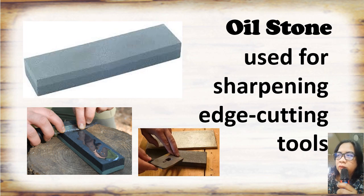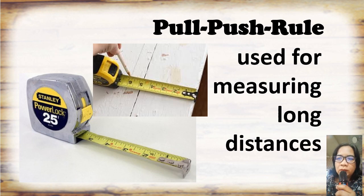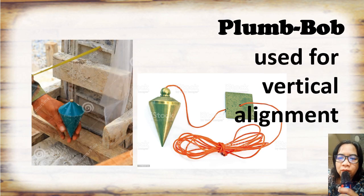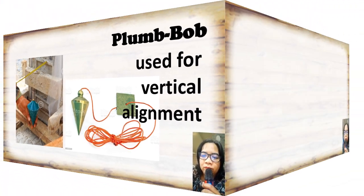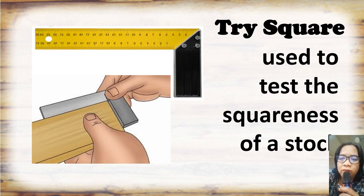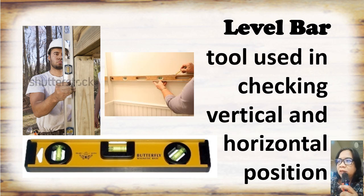Oil stone, used for sharpening edge cutting tools. Pull-push rule, used for measuring long distances. Plumb bob, used for vertical alignment. Tri-square, used to test the squareness of a stock. Level bar, a tool used in checking vertical and horizontal position.